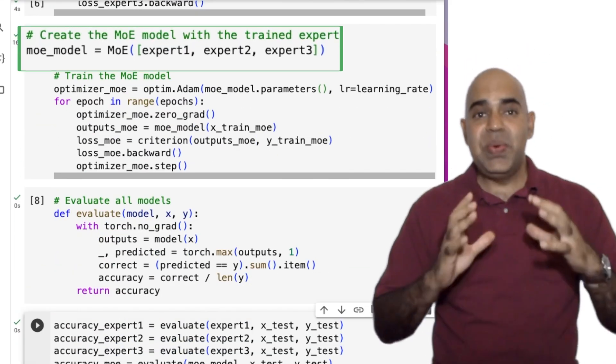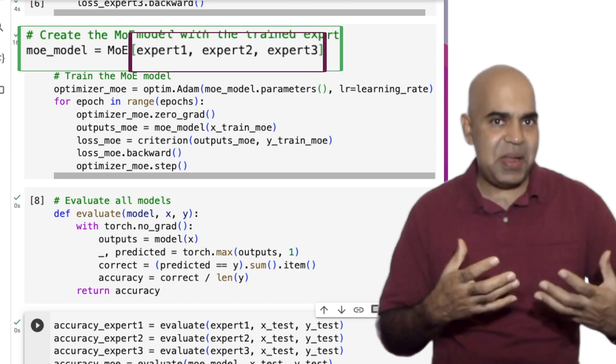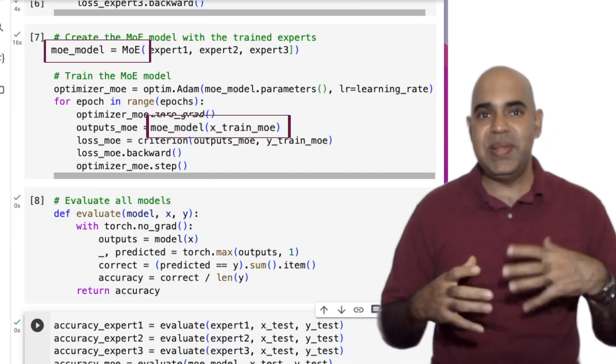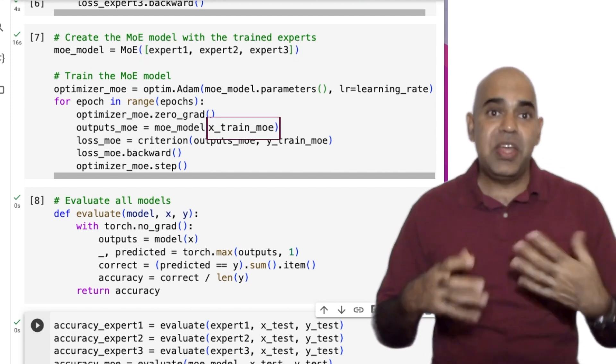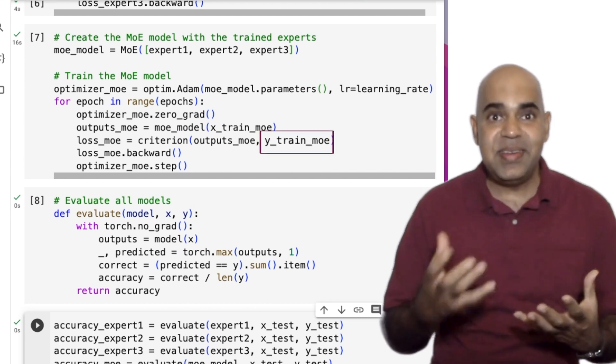For the mixture of experts, we send the three already trained experts as parameters. Through the gating network, the mixture of experts will check what these three networks are saying about each sample and compare the predicted outcomes of the experts with the target level.